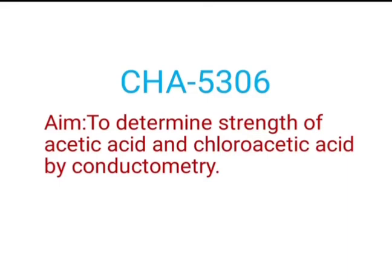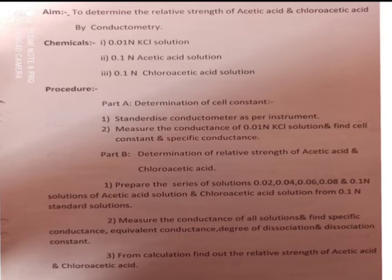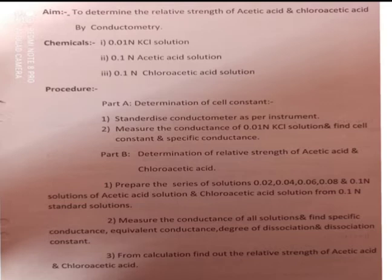The aim of this experiment is to determine the relative strength of acetic acid and monochloroacetic acid by conductometry. The chemicals required are 0.01 normal KCl solution, 0.1 normal acetic acid solution, and 0.1 normal chloroacetic acid solution.